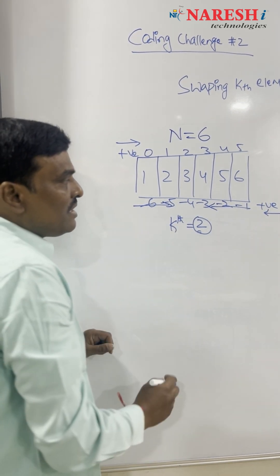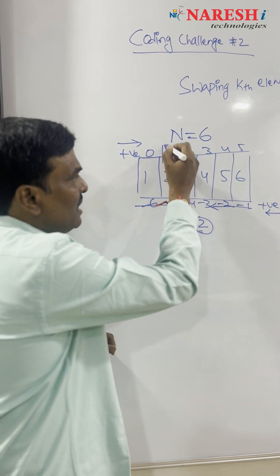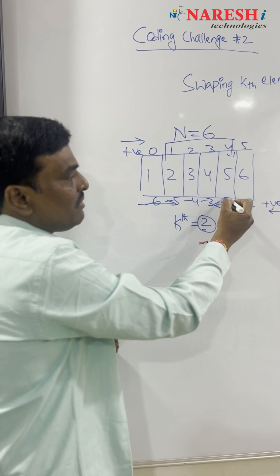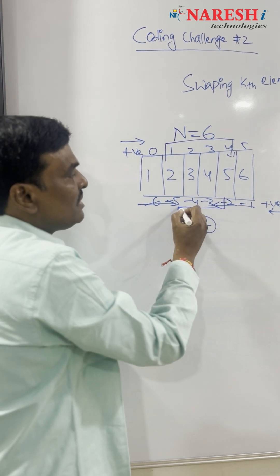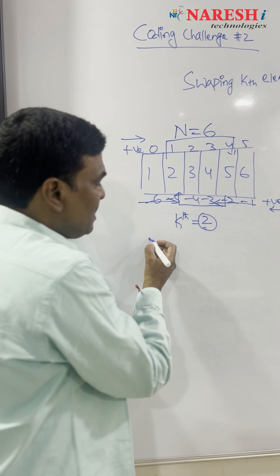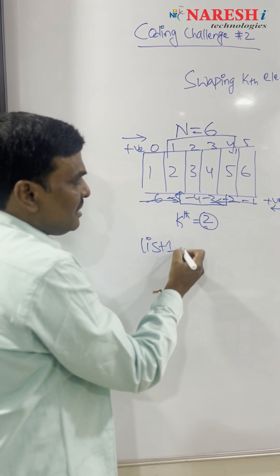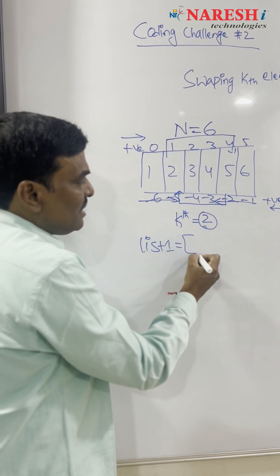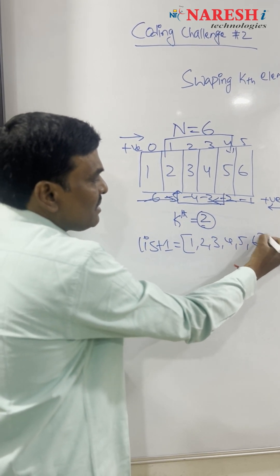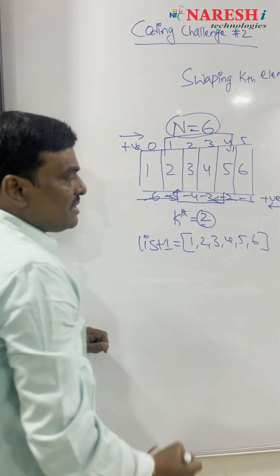Now our task is to interchange the element at the second position from the beginning with the element at the second position from the ending. For this, I've taken a list called list one with elements one, two, three, four, five, and six, because the size of the list is six.